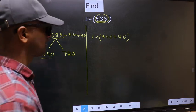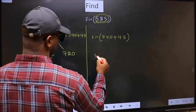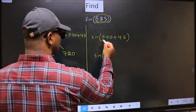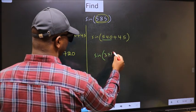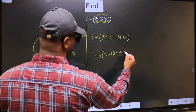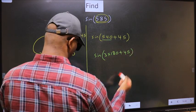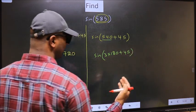Next, sin. In place of 540, now we should write 3 into 180 plus 45.